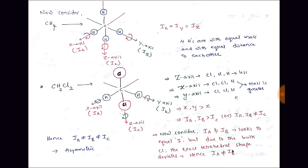Through the z-axis of CH₂Cl₂, we have only one chlorine and two hydrogens — less mass — so less moment of inertia for Ic. However, because the bulky chlorine atoms cause the bond angles to deviate from tetrahedral, x and y are also not equal. So Ic is less compared to x and y, and Ia and Ib are also not equal to each other due to the bond angle differences. Hence Ia ≠ Ib ≠ Ic, making CH₂Cl₂ an asymmetric top molecule.